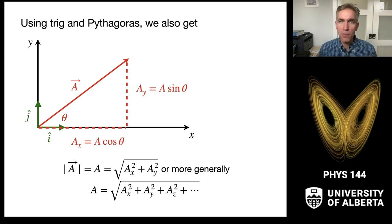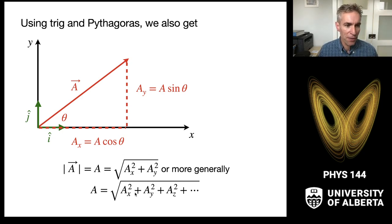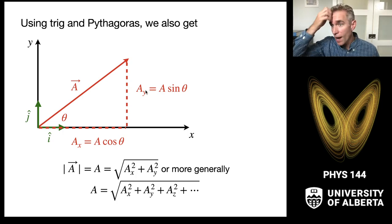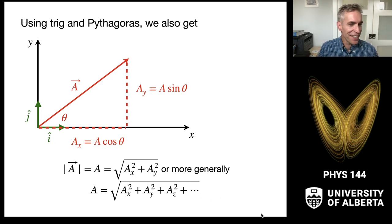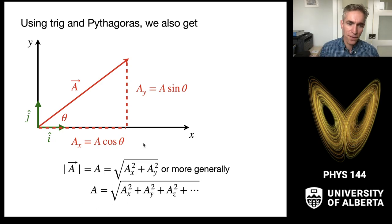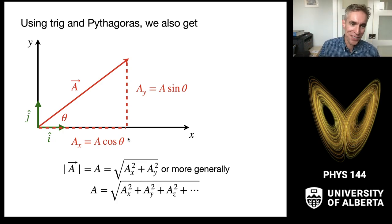Using trigonometry and the Pythagorean theorem, we can relate the magnitude to the components. The length of the hypotenuse is √(aₓ² + aᵧ²). This actually holds in all dimensions: √(aₓ² + aᵧ² + aᵤ²), and if you wanted a w-axis and kept going, you can do that. It's the Pythagorean sum: add up the squares of all components and take the square root.